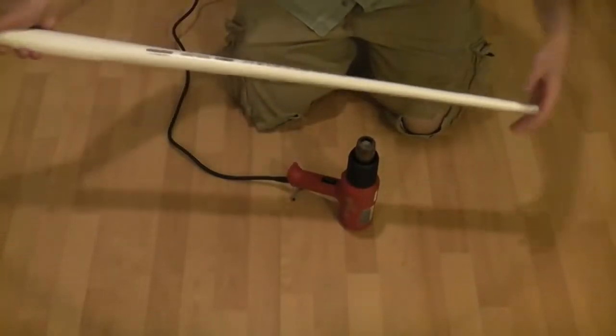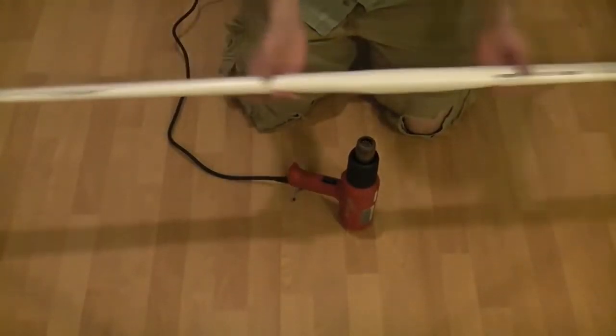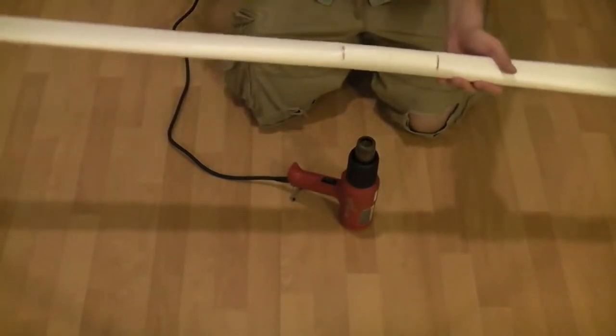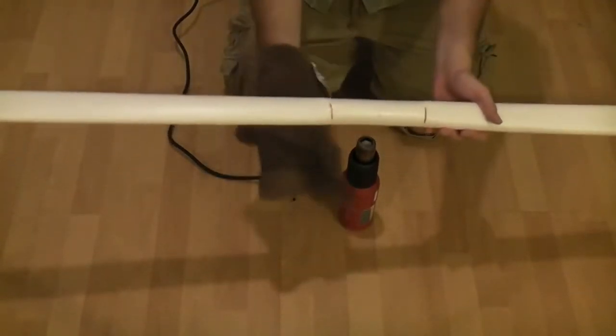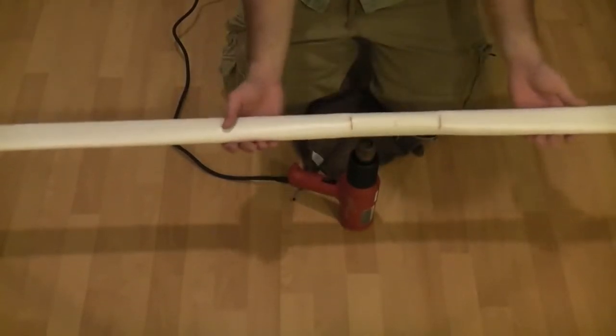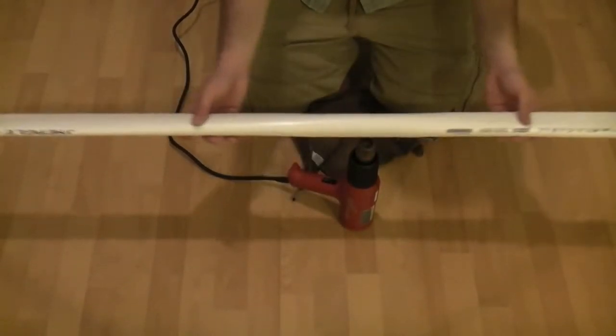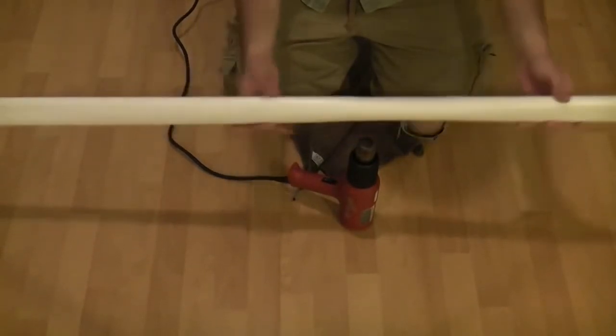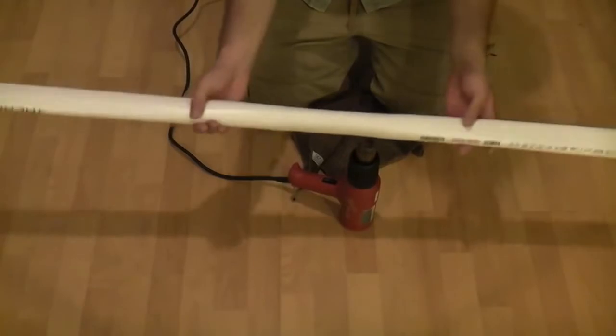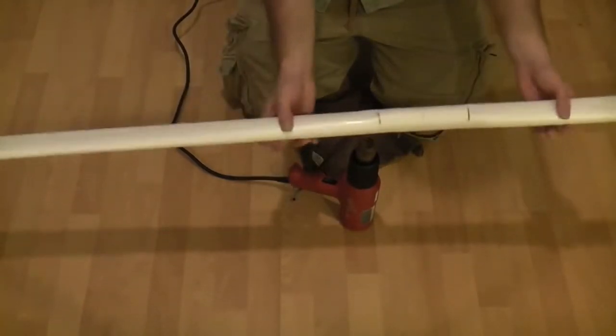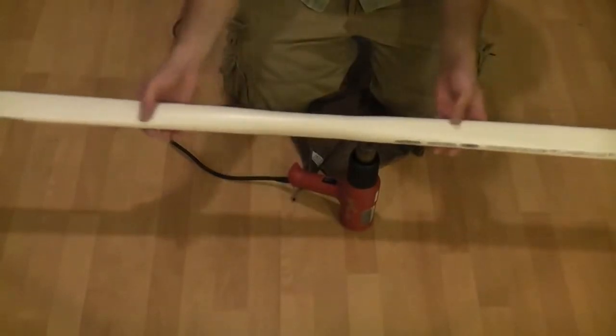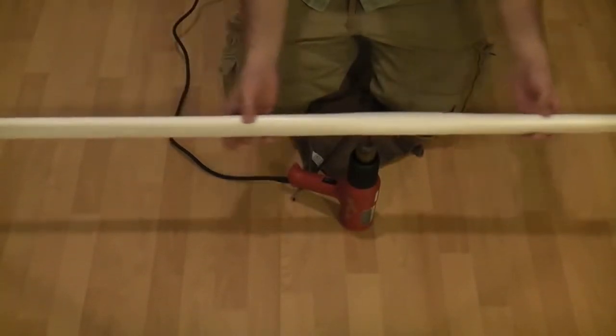Alright, so now that you've got both limbs tapered, what you want to do is heat up your handle section. And you want to get your heat protection ready, whatever that may be. You just want to gently heat up the handle, concentrating on these hollow spots here until this whole handle section is nice and flat.